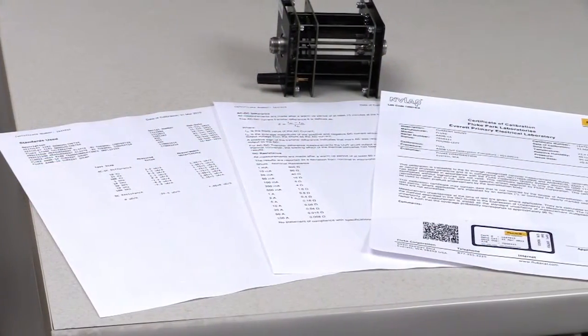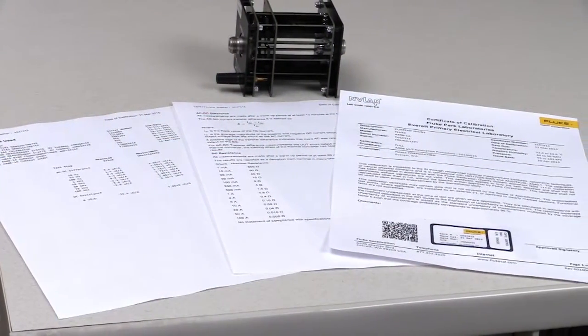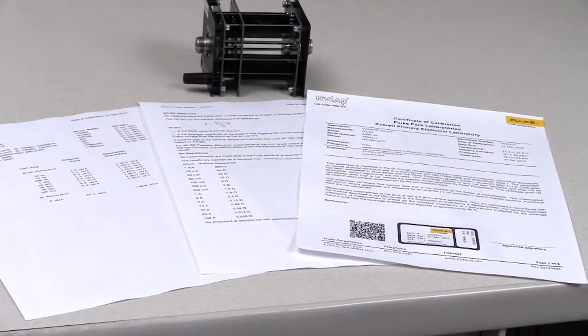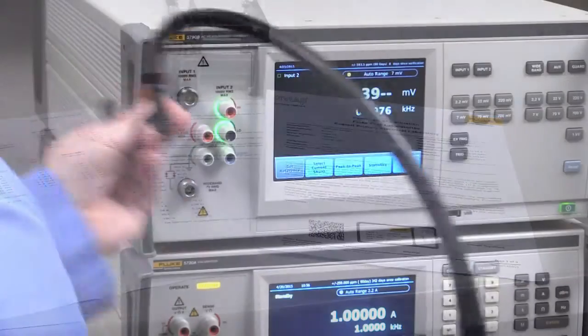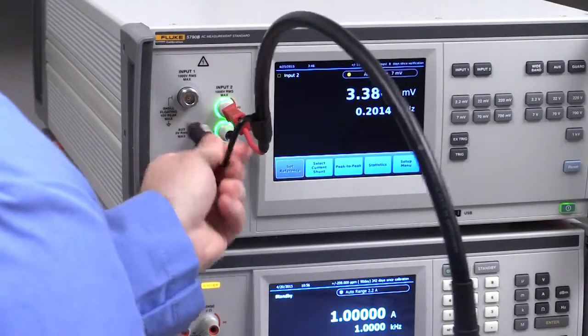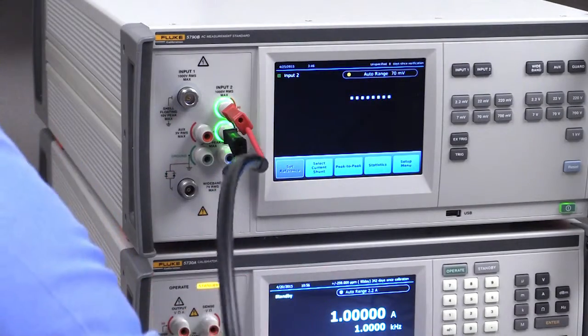Current shunts calibrated at Fluke A40B have a calibration certificate that clearly lists all of the information to load into the 5790B. After the shunt information has been loaded and you're ready to make a current measurement,